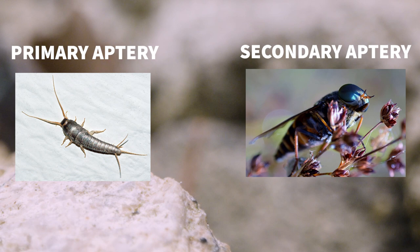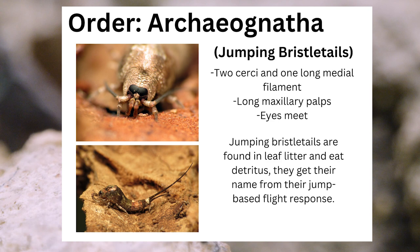Primarily apterous insect orders include the order Archaeognatha, also known as jumping bristletails, which can be identified by their three long filaments — two cerci and one longer medial filament — long maxillary palps, and eyes that meet at the top of their head. Jumping bristletails are found in leaf litter and they eat detritus. They get their name from their jump-based flight response.